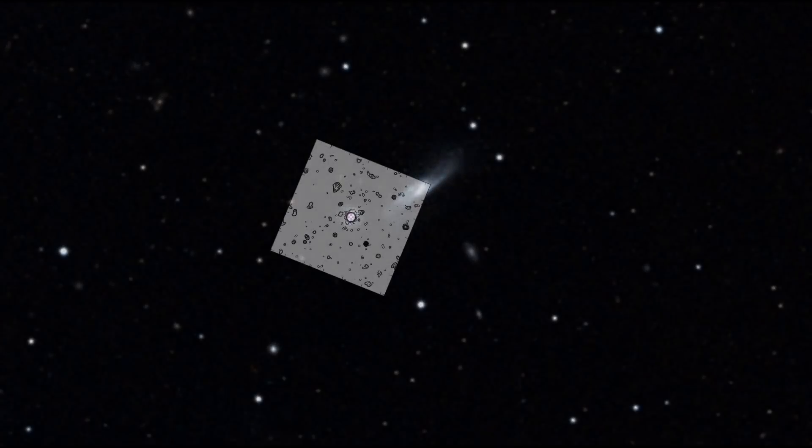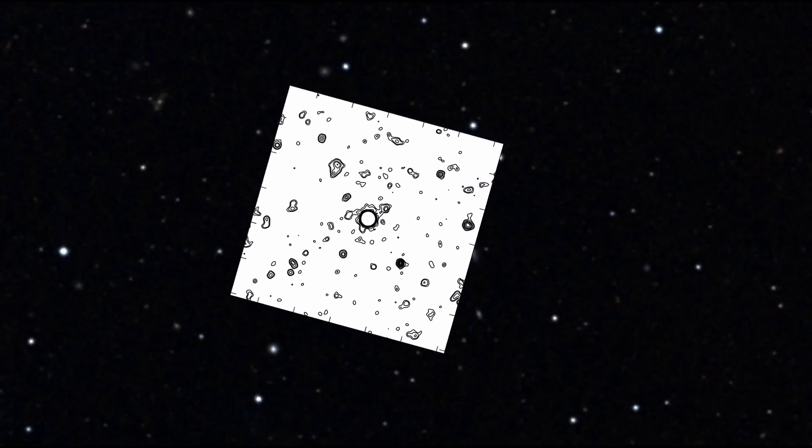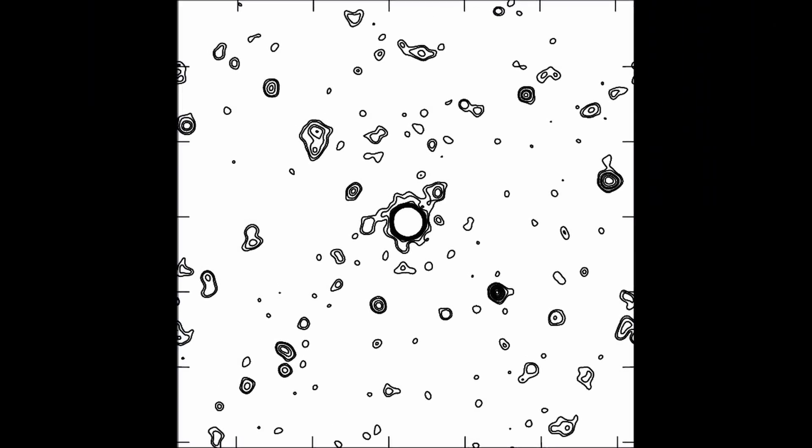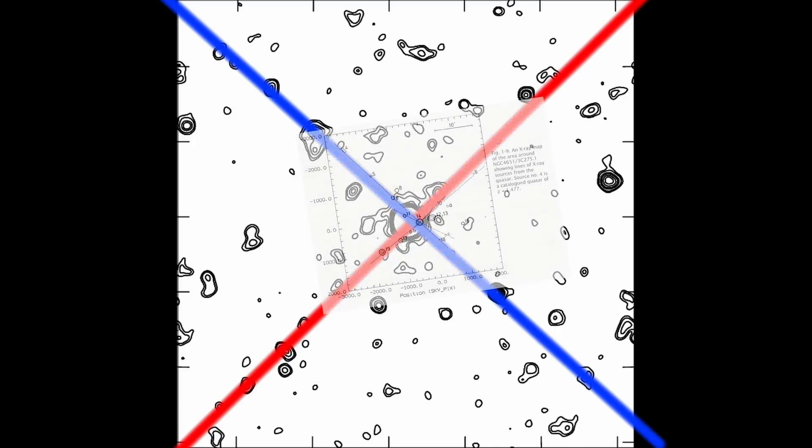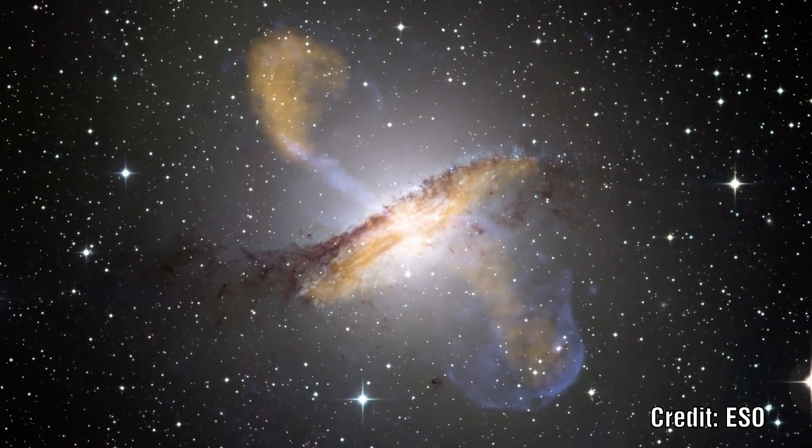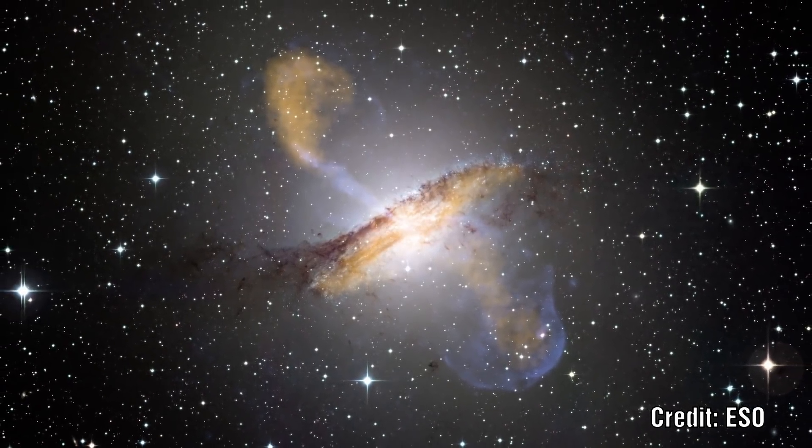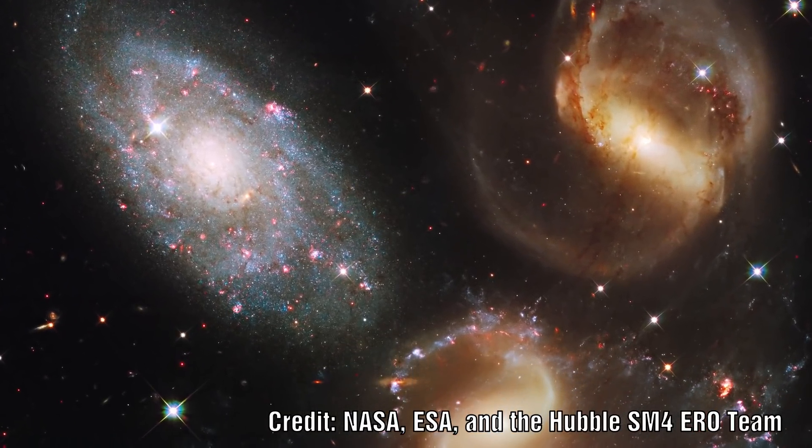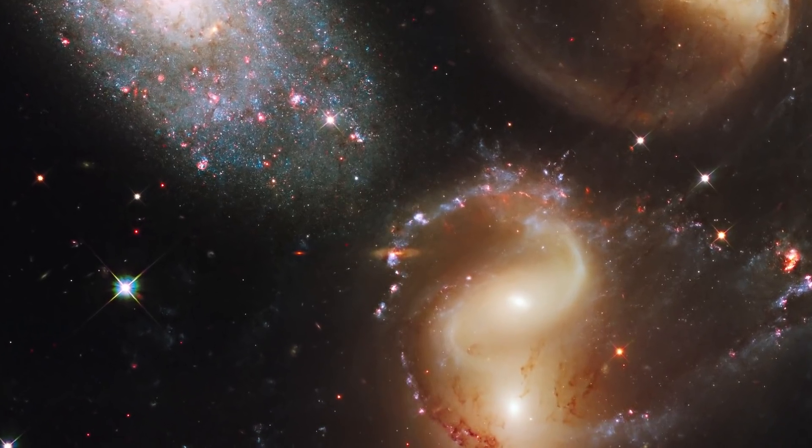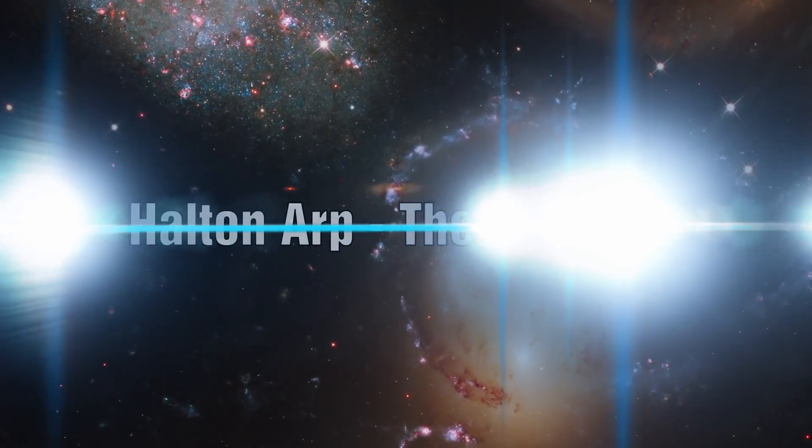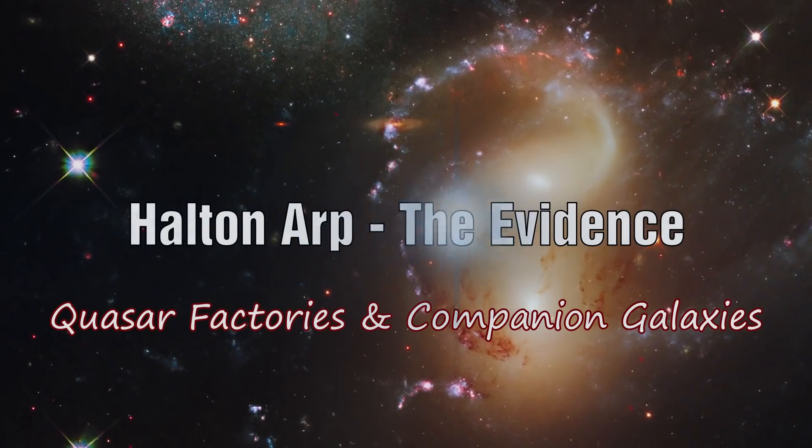In the previous episode, we examined the fact that a lot of quasars seem to lie across from a central galaxy and have a very similar redshift to each other. In this episode, we will start by examining some of the Seyfert galaxies which seem to produce many quasars. We will then examine how the redshift of galaxies and companion galaxies breaks the idea that redshift is only related to recessional velocity and shows a clear hierarchical structure.